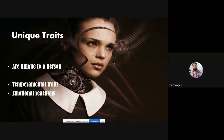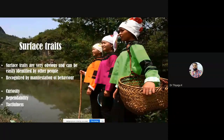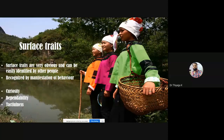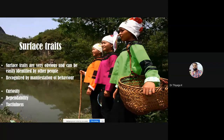Surface traits are those we can observe directly through a person's behavior and actions — characteristics like dependability and tactfulness. Surface traits are very obvious and can be easily identified by others through observation. These traits are visible openly from the individual's characteristics.